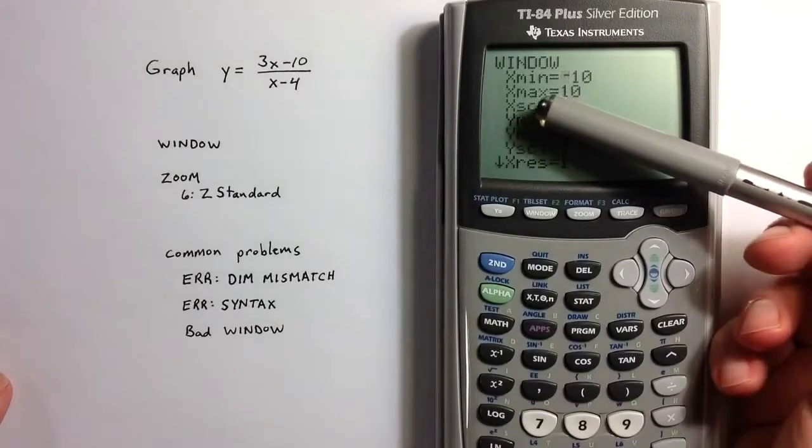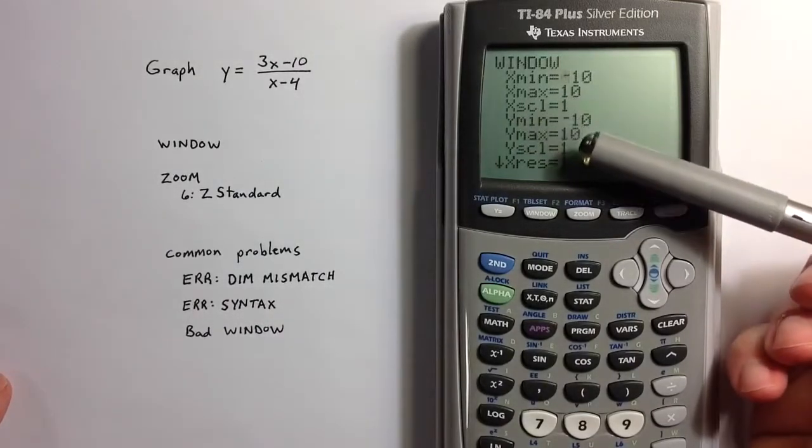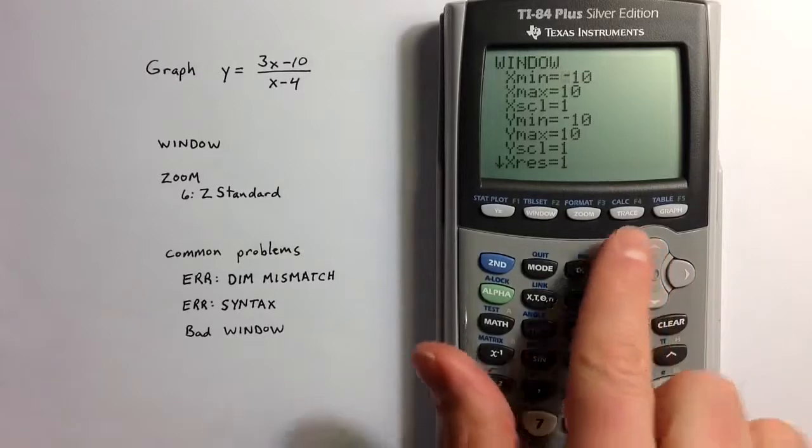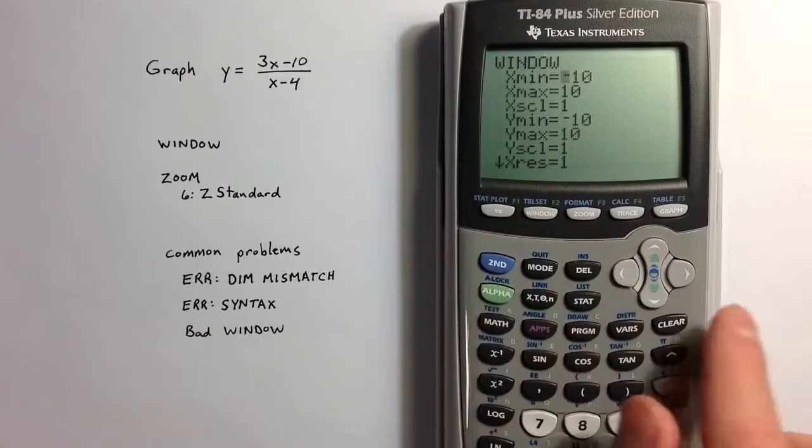The other values here, the x scale, indicates how far apart the tick marks on the graph are. And so they're counting by ones.